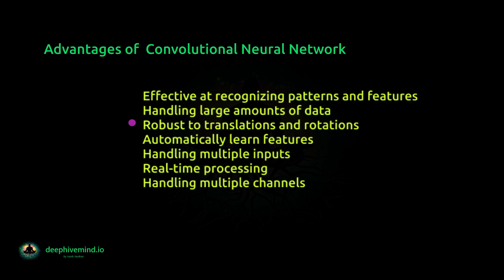CNNs are robust to translations and rotations of the input data, meaning they can still make accurate predictions even when the input data is slightly shifted or rotated. CNNs are able to automatically learn features from the data, which reduces the need for manual feature extraction, making the network more efficient and effective. CNNs can also handle multiple inputs of different sizes and shapes, making them well-suited for tasks such as video recognition and object detection where the input data may have varying dimensions.